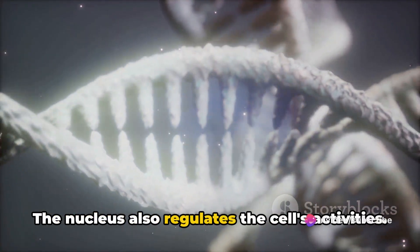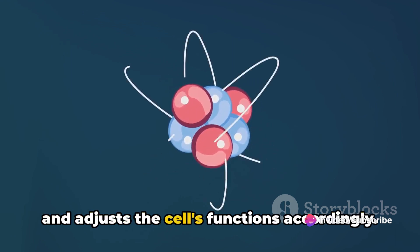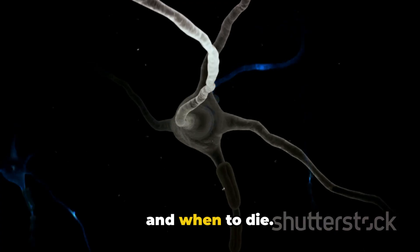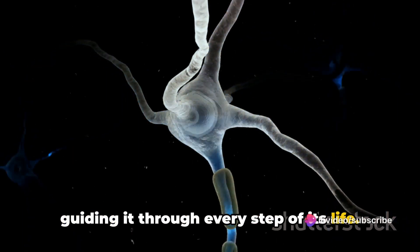The nucleus also regulates the cell's activities. It monitors what's going on in the cell and adjusts the cell's functions accordingly. It decides when to grow, when to divide, and when to die. It's like the cell's personal coach, guiding it through every step of its life.